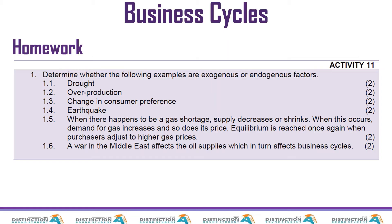When there happens to be a gas shortage — supply decreases or shrinks — demand for gas increases and so does the price. Equilibrium is reached once again when purchases adjust to the higher price. This is something happening from within, so it becomes an endogenous reason.